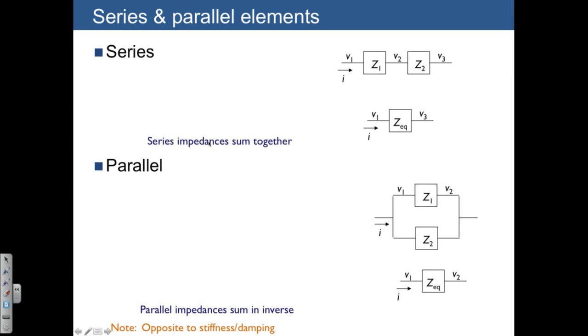First of all, if we have two items in series, their impedances add together. And if they're in parallel, we sum them in inverse. This is actually opposite to how we work with stiffness or damping in mechanical systems. So this is one case where we actually have to remember that things are a little bit different. But the idea is that the equivalent impedance for these two elements together is just going to be Z1 plus Z2.